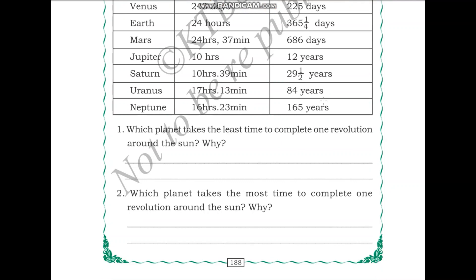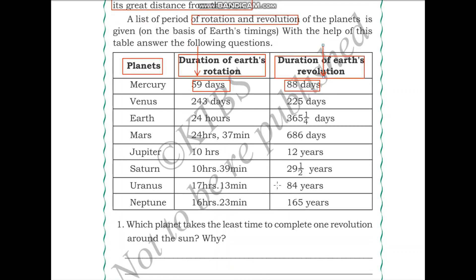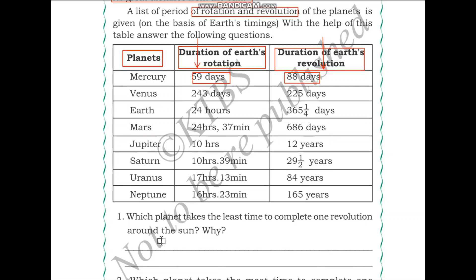Which planet takes the least time to complete one revolution around the Sun? Let us look at the timings. The year of Mercury is only 88 days. When you consider the other planets, it's much more than that. Why is it that Mercury takes the least amount of time? It is because Mercury is the closest planet to the Sun.